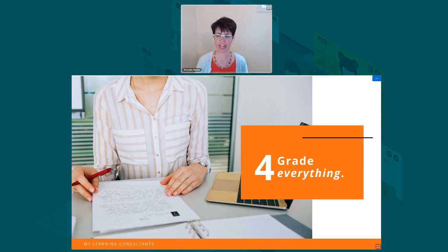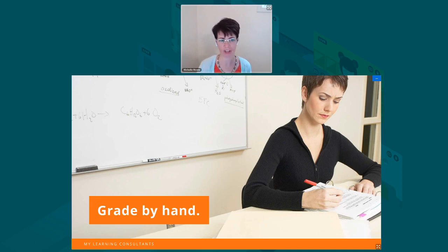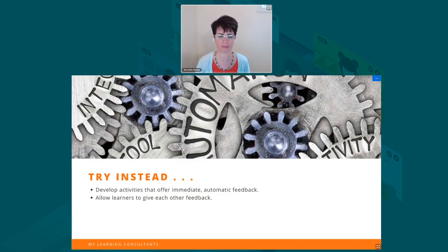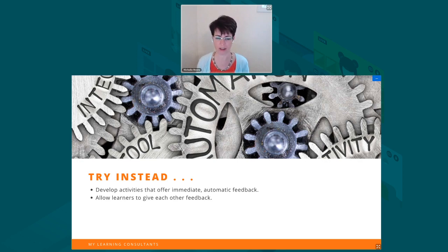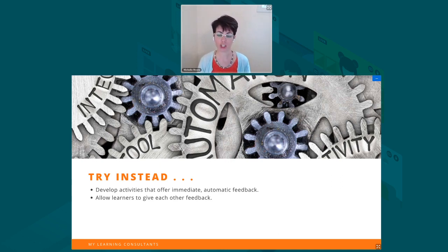Another challenge is that I see people grading everything — trying to make sure they provide feedback on every single element, whether it's forum posts, rating each one, giving feedback on every assignment submitted, and then doing everything by hand, which makes it that much more time consuming. Instead, try developing activities that offer immediate automatic feedback. This saves you time and provides students a huge advantage in that they get the feedback right at the moment of interaction when it's most relevant. And then allow learners to give each other feedback — you can use ratings, you can use the workshop. Students can cover much of the feedback at the lower levels, saving you to provide the more advanced feedback.